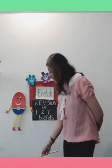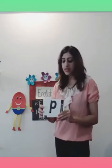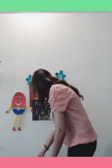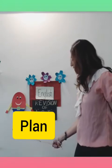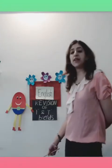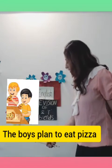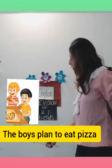Now we move on to the next word. What sound does this letter make? P. And this letter? L. And together we hear the sound 'pl'. Now let's form a word: 'pl' and 'an' makes plan. What do you mean by the word plan? It is to decide to do something. So now let's form a sentence: The boys plan to eat pizza.